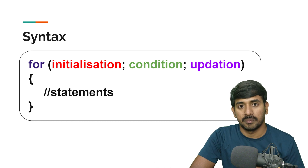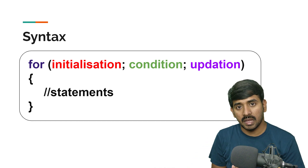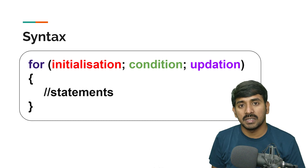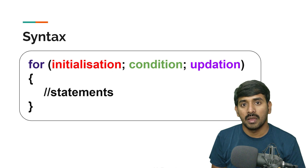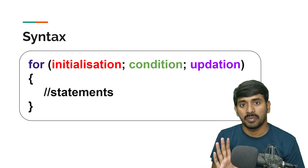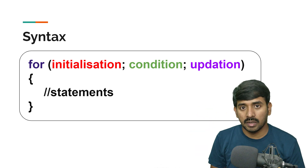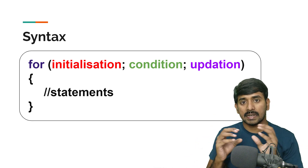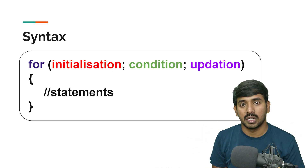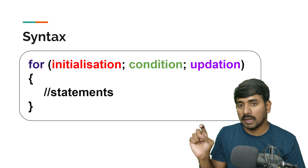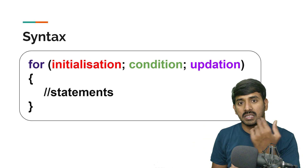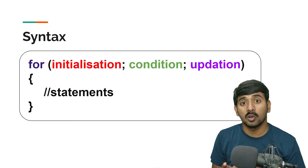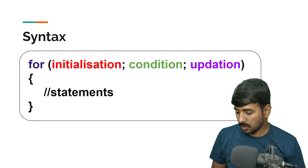Inside the curly brackets you add your statements. This is similar to how while works, but in for loop, initialization, condition checking, and value updation are all in one line. In while, you declare the value outside, check the condition in the while, and update inside the body. For loop is a simplified version — initialization, condition, and update all in one place.